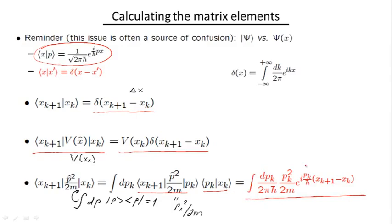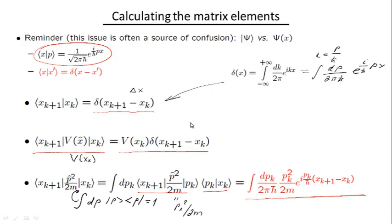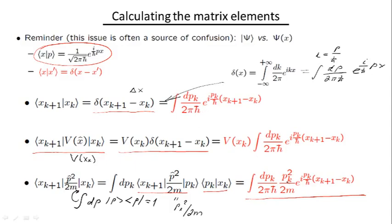Putting everything together for the kinetic energy matrix element gives a result involving an integral over momentum p_k. In order to write all matrix elements in a similar fashion, we use the Fourier transform relation for the delta function and replace k with p/ℏ. Doing so gives essentially the same integral but integrated over momentum, with the exponential involving (i/ℏ) p·x — the same expression for the delta function — allowing us to write all matrix elements in terms of these integrals.